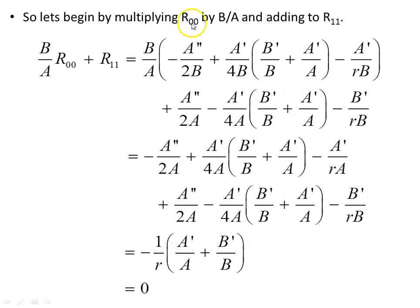So let's begin by multiplying the 00 component by B/A and adding to R11. R11 was on the previous page, so B/A times R00 is this object here, plus R11 which is this object here. When we add them together, expand out B/A, expand it out, here we go, so that one, and R11, here it is.